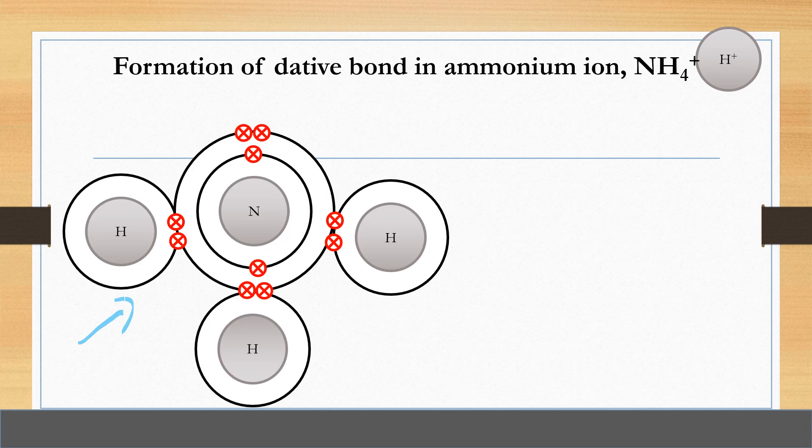As you can see here, hydrogen and nitrogen atoms achieve stable duplet and stable octet electron arrangement in ammonia molecule.